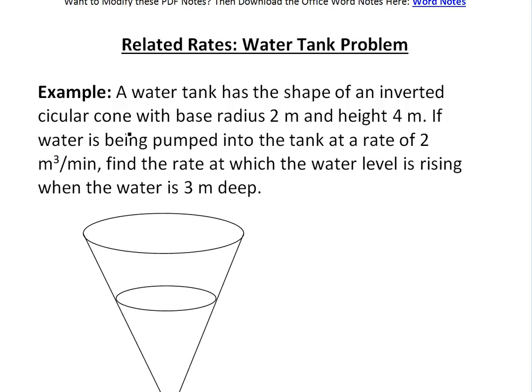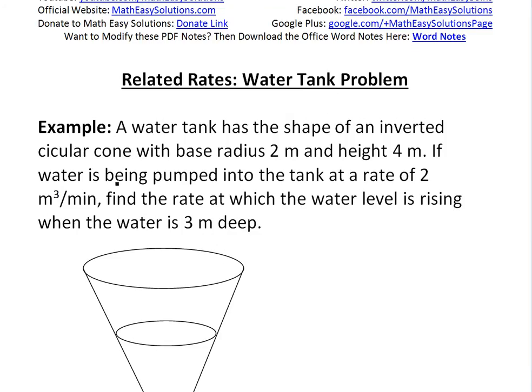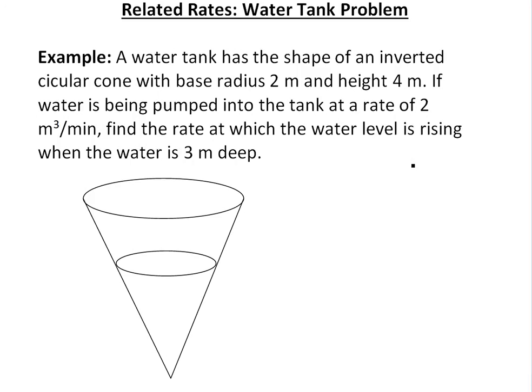So basically the example I'm going to go over states a water tank has the shape of an inverted circular cone with base radius 2 meters and height 4 meters. So that's if you look at this cone right here, this one is the water part right there.